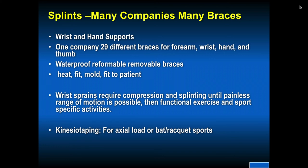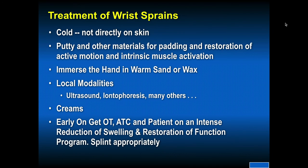There are waterproof, reformable, removable braces — you can heat them up, fit them, and mold them to the patient. Wrist sprains require compression and splinting until painless range of motion is possible, then functional exercise and sport-specific activity. Kinesio tape can be used for axial load or bat and racket sports. Treatment of wrist sprains includes compression and cold, but not directly on the skin. Putty is good for active motion, and local modalities can include ultrasound and iontophoresis.